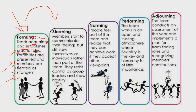The second stage is Storming. Members start to communicate their feelings but still view themselves as individuals rather than part of a team. You've just met a group of people on the first day, but you don't get along quickly — you need time to know each other's differences of opinion and to settle down as a team. As they say, Rome was not built in a day; similarly a team is not built in a day.